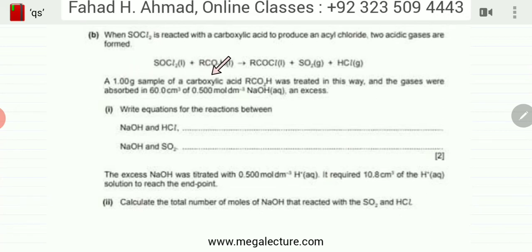The question reads that a one gram sample of carboxylic acid RCOH was treated in this way, and the gases were absorbed in 60 cm³ of 0.5 mol per dm³ NaOH in excess. What's happening is NaOH is reacting with these two acidic gases, which are going to be absorbed by the alkali.